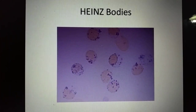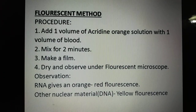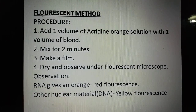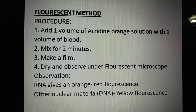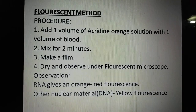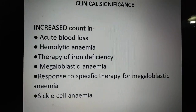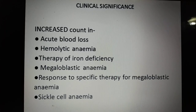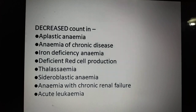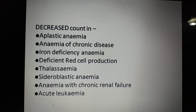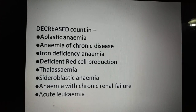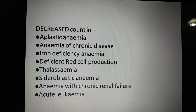As you can see, the greenish-blue inclusion-like bodies are HbH bodies, and the multiple blue dots attached to the cell membrane are Heinz bodies. Regarding the fluorescent method: acridine orange solution is mixed with blood in equal volume, a film is made, and observed under a fluorescent microscope. RNA gives orange-red fluorescence and DNA gives yellow fluorescence. Reticulocyte count increases in acute blood loss, hemolytic anemia, therapy of iron deficiency, megaloblastic anemia, and response to specific therapy for megaloblastic or sickle cell anemia.